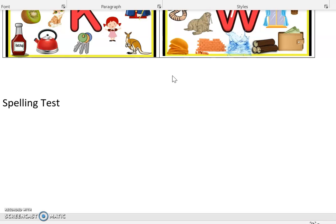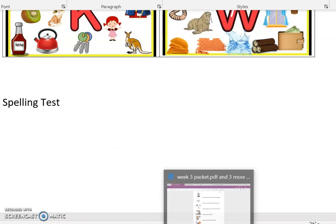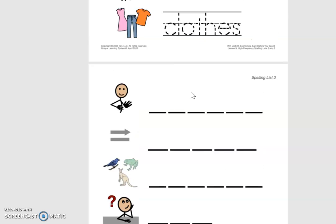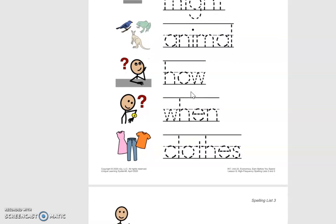The next thing we are going to do is do a spelling test. You need to get out the piece of paper that looks like this. You will see the pictures on the left-hand side, and you will see blank spaces next to each picture. The blank spaces represent the number of letters in each word. It's going to be right after the page where you traced the words.